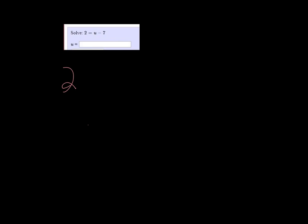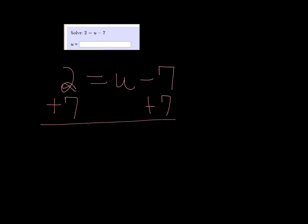All right, we're going to solve 2 equals u minus 7 for u. We have u minus 7, and we want u by itself. We need to undo the subtraction by adding 7 to both sides. So we get 9 is equal to u, which can be written as u equals 9.